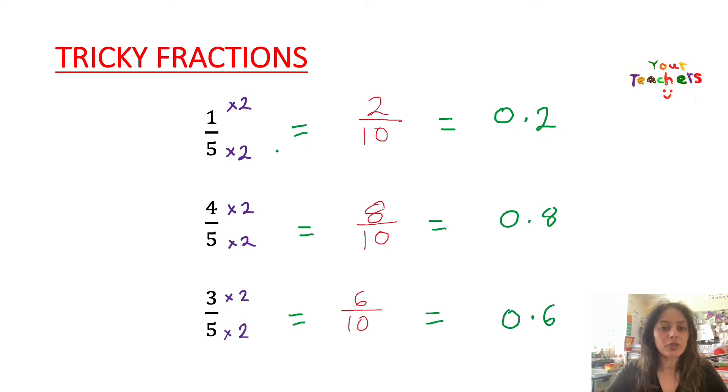Let's have a look at the next one, 4 over 5. I'm again multiplied by 2 because I know that 5 times 2 is going to give me a baseline 10 number at the bottom as my denominator. So 8 tenths and that becomes 0.8. And again, 3 fifths, I'm going to multiply by 2 again. So 5 times 2 is 10 and 3 times 2 is 6.